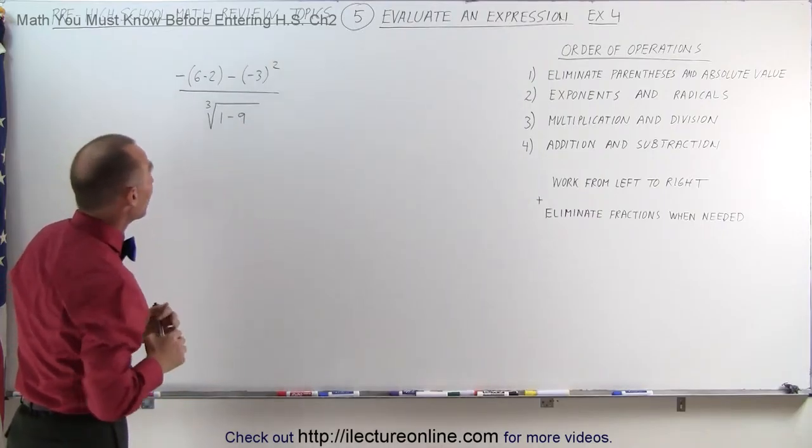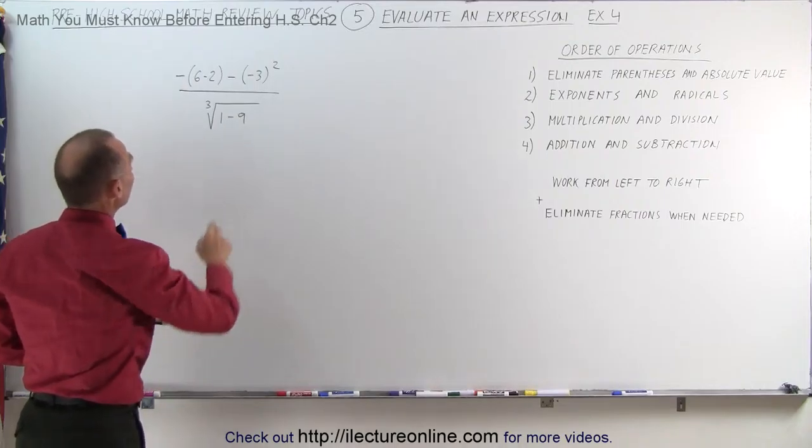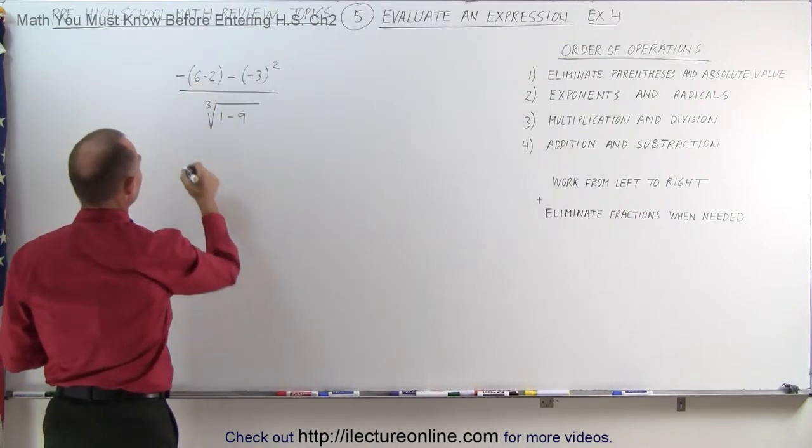So again, we need to follow the order of operations. Let's first eliminate parentheses. In the numerator here, we can have 6 minus 2. We can simplify that.